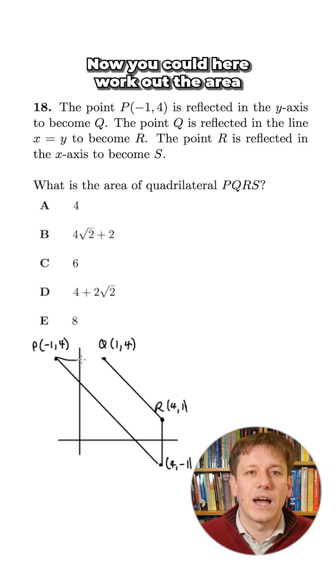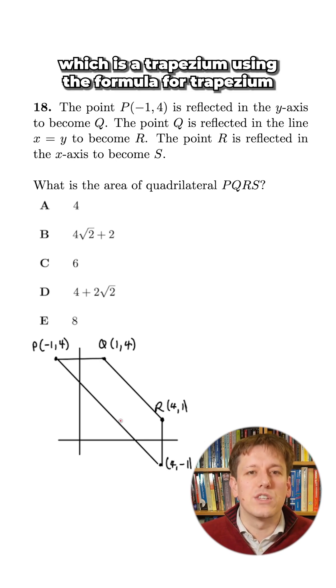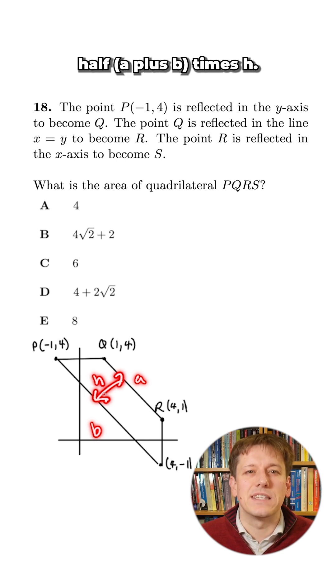Now you could here work out the area of this quadrilateral which is a trapezium using the formula for a trapezium half A plus B times H.